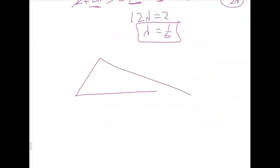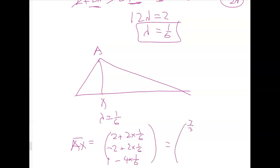So now, here's my triangle. Here's X. And X has got a lambda value of 1 sixth. And here's A. Now, AX is equal to, from above, if you go back up the screen, AX is equal to 2 plus 2 lambda, negative 2 plus 2 lambda, and 1 minus 4 lambda. That cleans up to give me 7 thirds, negative 5 thirds, and 1 third.